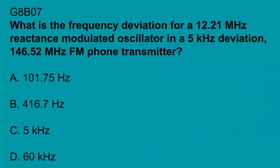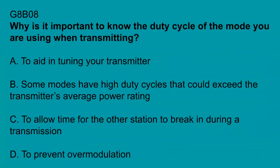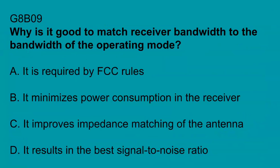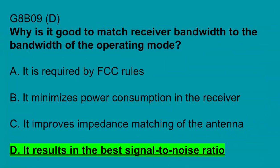G8B07: What is the frequency deviation of a 12.21 MHz reactance modulated oscillator in a 5 kHz deviation, 146.52 MHz FM phone transmitter? 416.7 Hz. G8B08: Why is it important to know the duty cycle of the mode you are using when transmitting? Some modes have high duty cycles that could exceed the transmitter's average power rating. G8B09: Why is it good to match receiver bandwidth to the bandwidth of the operating mode? It results in the best signal-to-noise ratio.